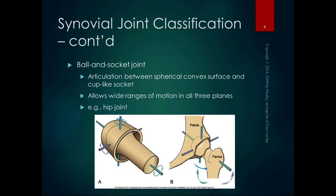The ball-and-socket joint is an articulation between a spherical convex surface and a cup-like socket. It allows wide ranges of motion in all three planes — three degrees of freedom: sagittal, frontal, and transverse. The hip and shoulder are the classic ball-and-socket joints: the glenohumeral joint and the femoral-acetabular joint. These joints clearly favor mobility over stability.